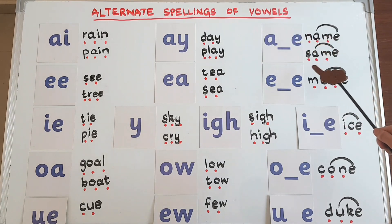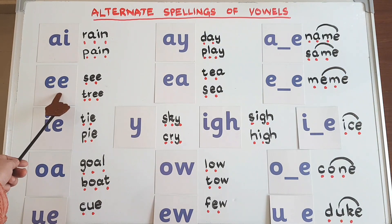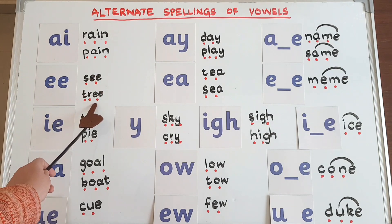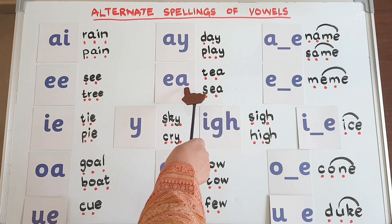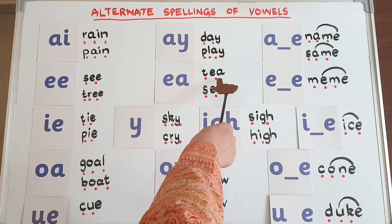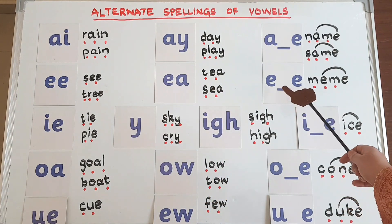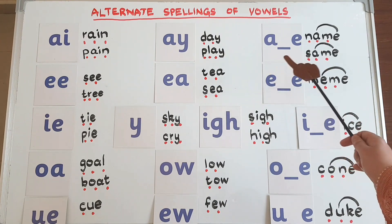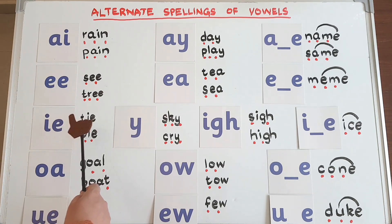This is 'e', one of the 42 sounds, and we read it like in 'tree'. Now the alternate spelling is 'ee' — this is also 'e', as in 'teeth' and 'feet'. Now again the magic 'e': the 'e' will cast its magic on the previous vowel and make it say its name, like in 'meme'.